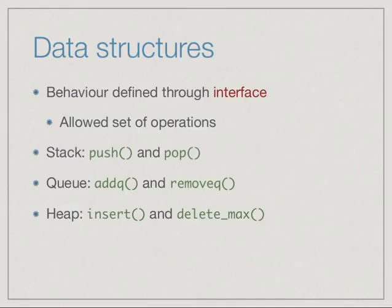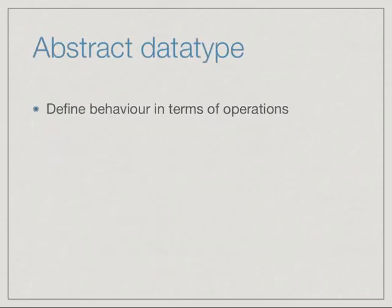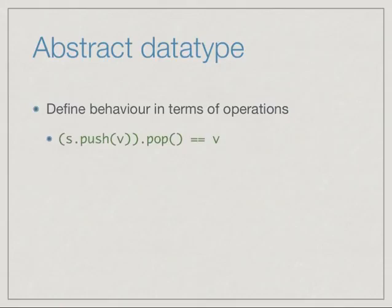Just because we implement a heap as a list does not mean that the functions defined for lists are legal for the heap. If we have a heap h implemented as a Python list, the list will allow an append function, but append on its own does not insert a value and maintain the heap property. So in general, a call such as h.append(7) would not be legal. We want to define new abstract data types in terms of the operations allowed, not based on whether the underlying structure is a list.